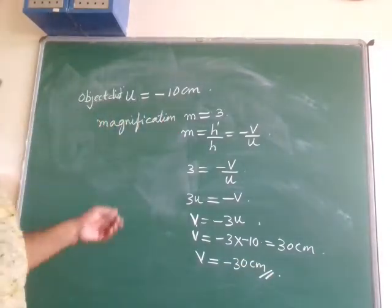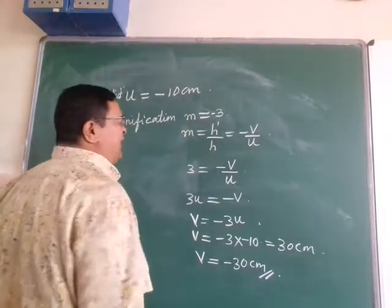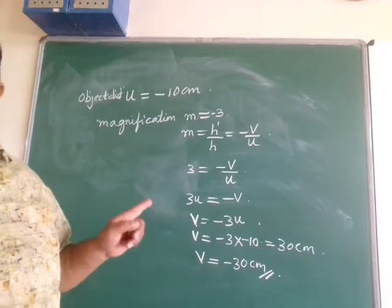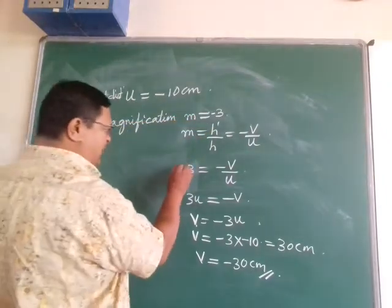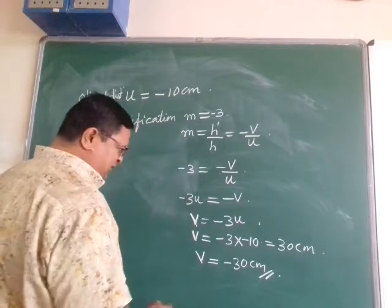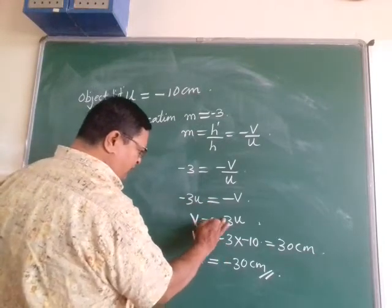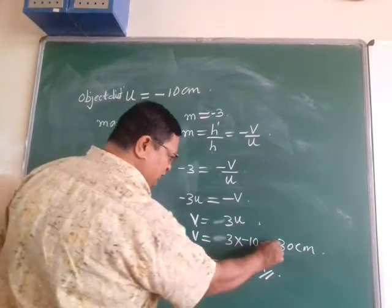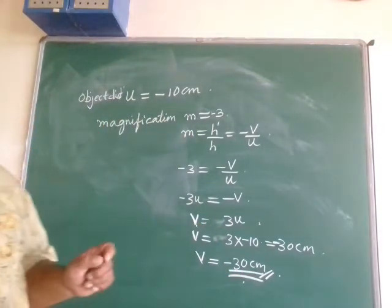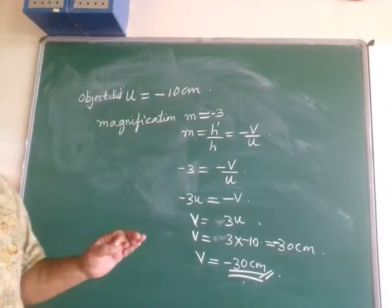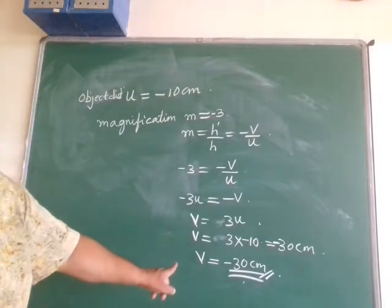Real images are formed to the left of the mirror. The correction here is that magnification m equals minus 3 because for real images, magnification is negative. So m equals minus 3, and solving the equation, both minus signs cancel giving v equals minus 30 centimeters. The image is formed 30 centimeters in front of the mirror.